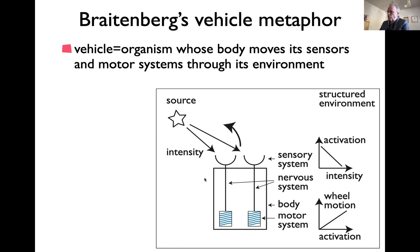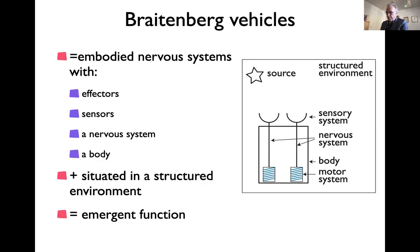The vehicle in a nutshell has five important components: the environment — where there is structure that is often overlooked — sensors, motors, a body that connects sensors and motors physically and mechanically, and a nervous system, represented by these lines, that connects sensors to motors neurally.